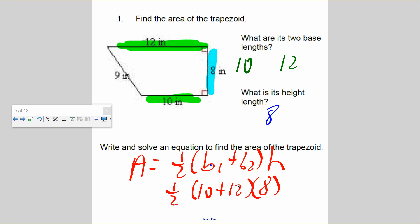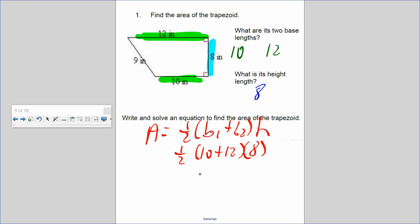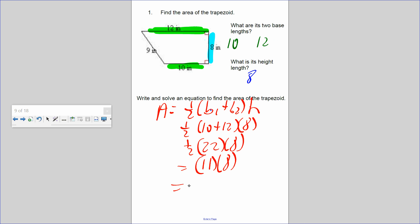What's half of 10 plus 12? Well, first of all, 10 plus 12 is 22. So half of 22 is 11, 11 times 8. So the area equals 88 square inches. Again, you add up the two bases, half of it, times the height.